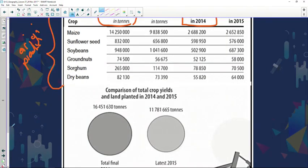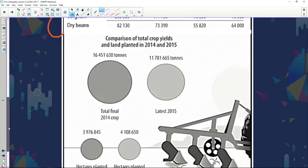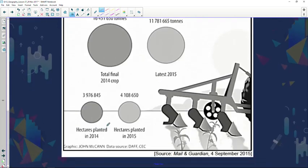As you can see, there's a comparison of the total crop yields. As you can see, much more has been produced in 2014 than in 2015. And if you look at the land that's being used, less land was used in 2014 than in 2015. But look at the correlation. More land was used in 2015 but less was produced. Less land was used in 2014 but more was produced. So let's quickly go and find out what the questions expect from us.